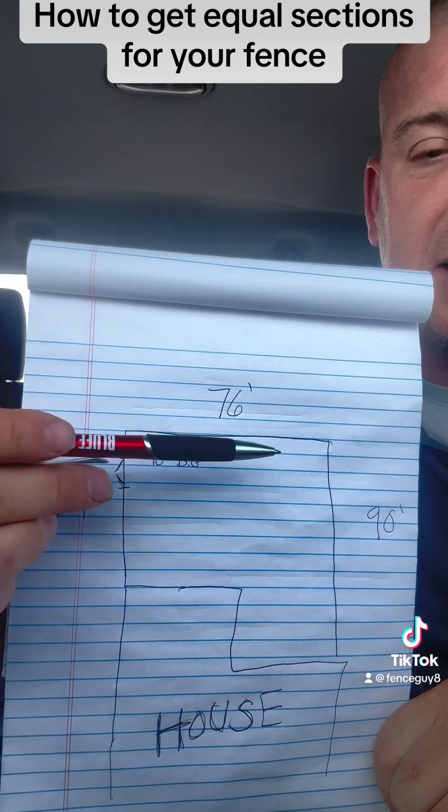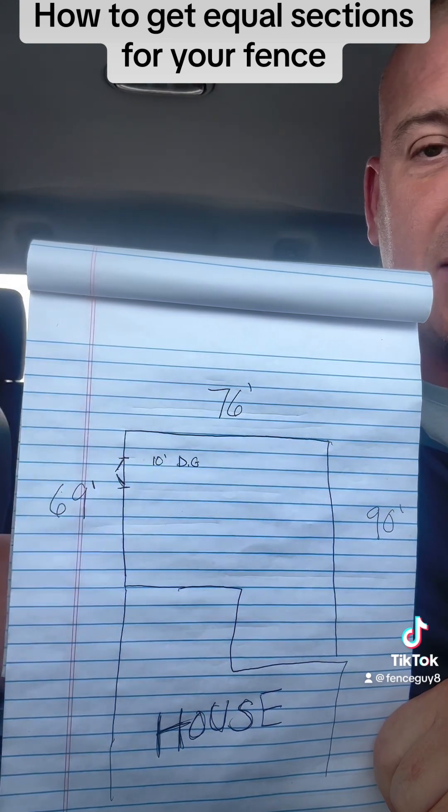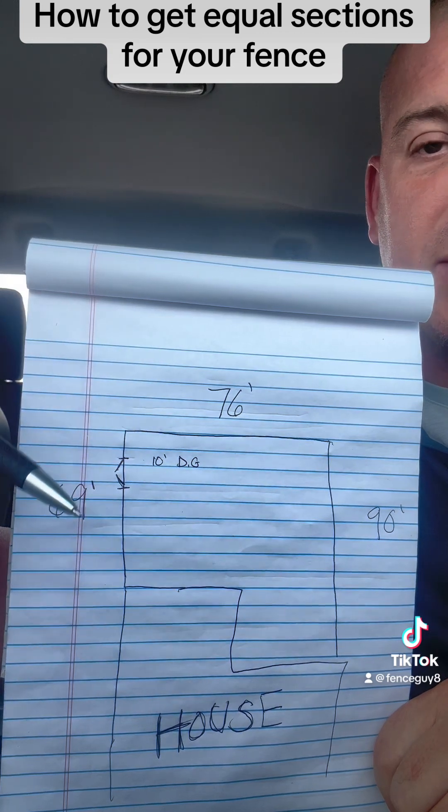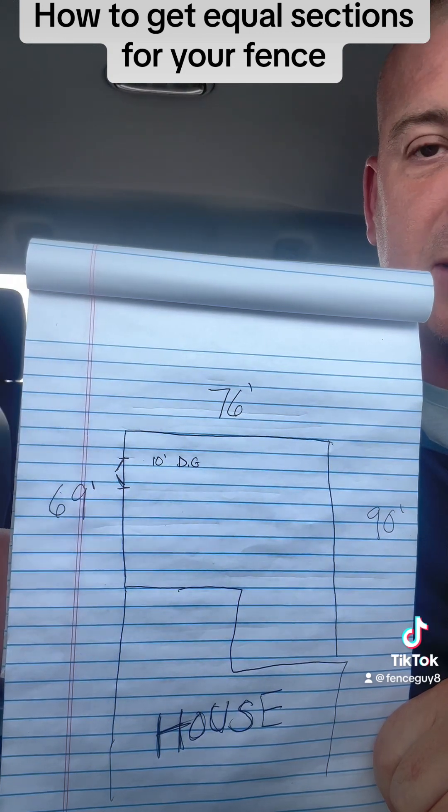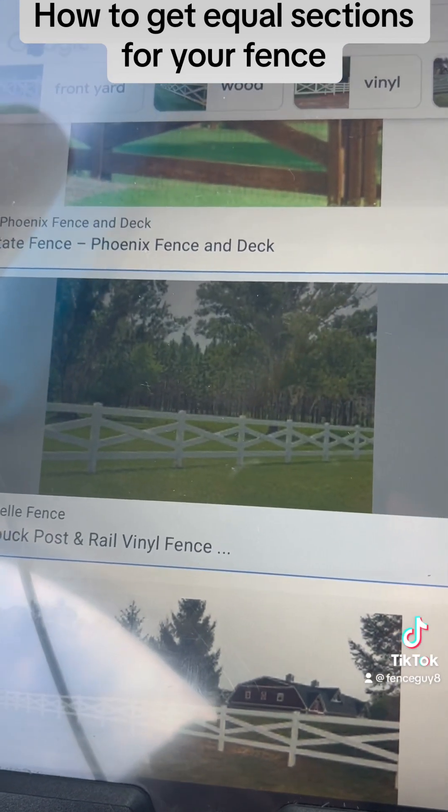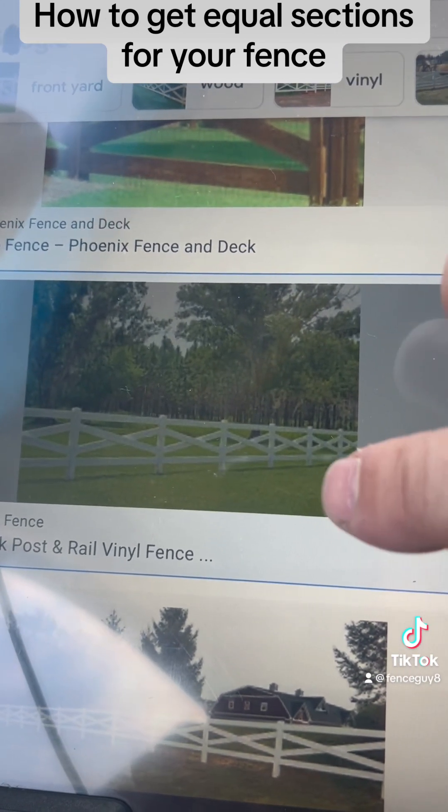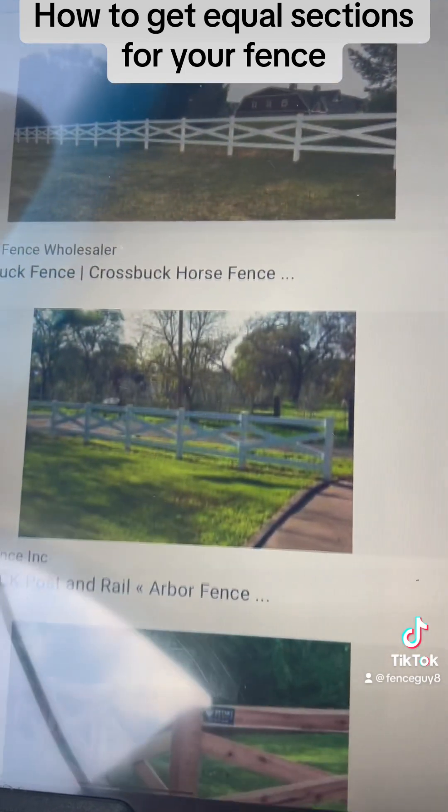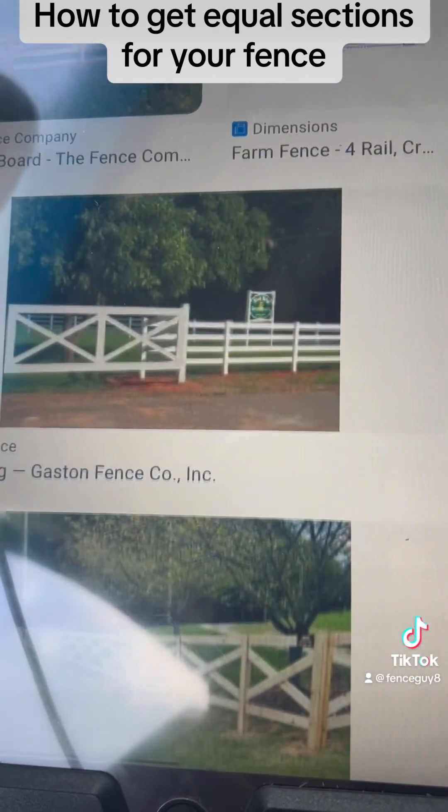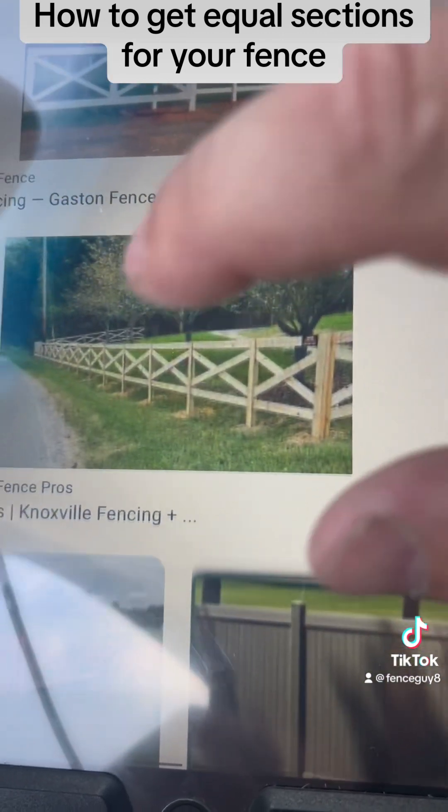So we're going to have sections that have an X. I'll show you the style of fence we're doing and I'll show you how to make the sections equal where you don't have a big section or a little section at the end. Alright, this is the style that I'm talking about when I say cross buck. There's a lot of variations of it, but this is one of the styles that aesthetically looks way better if you have equal sections.